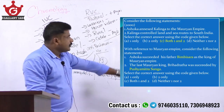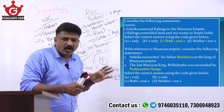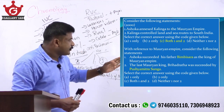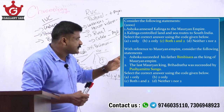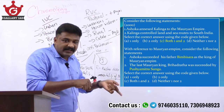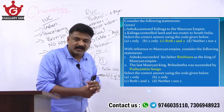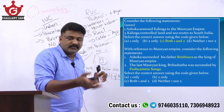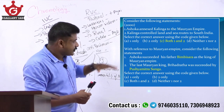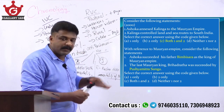Ashoka annexed Kalinga to the Mauryan Empire; Kalinga controlled the land and sea routes to south India — both are correct. Now with reference to the Mauryan Empire: Ashoka succeeded his father Bimbisara — wrong, his father was Bindusara. Be careful about similar-sounding words being interchanged. The last Mauryan ruler Brihadratha was succeeded by Pushyamitra Shunga — correct, Pushyamitra Shunga killed the last Mauryan ruler and founded the Shunga dynasty. So Ashoka's father was Bindusara not Bimbisara; second statement is true. Answer: two only.